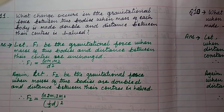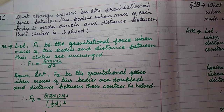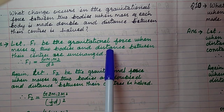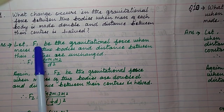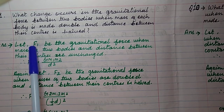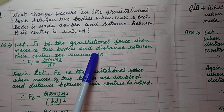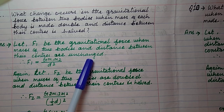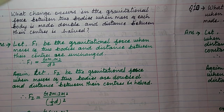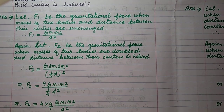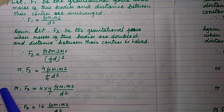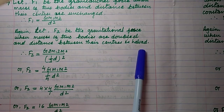What change occurs in gravitational force when the mass of each body is made double and the distance between their centers is halved? Let F₁ be the gravitational force when masses and distance are unchanged: F₁ = Gm₁m₂/d² — equation 1. Now let F₂ be the gravitational force when masses are doubled and distance is halved.